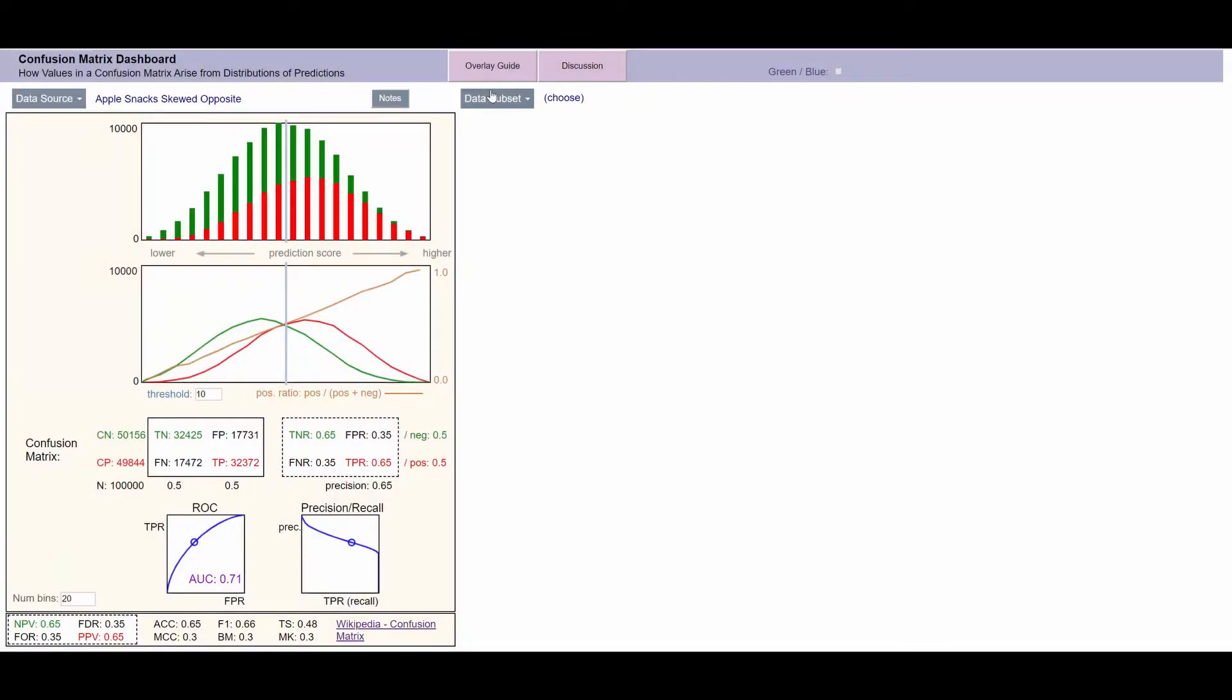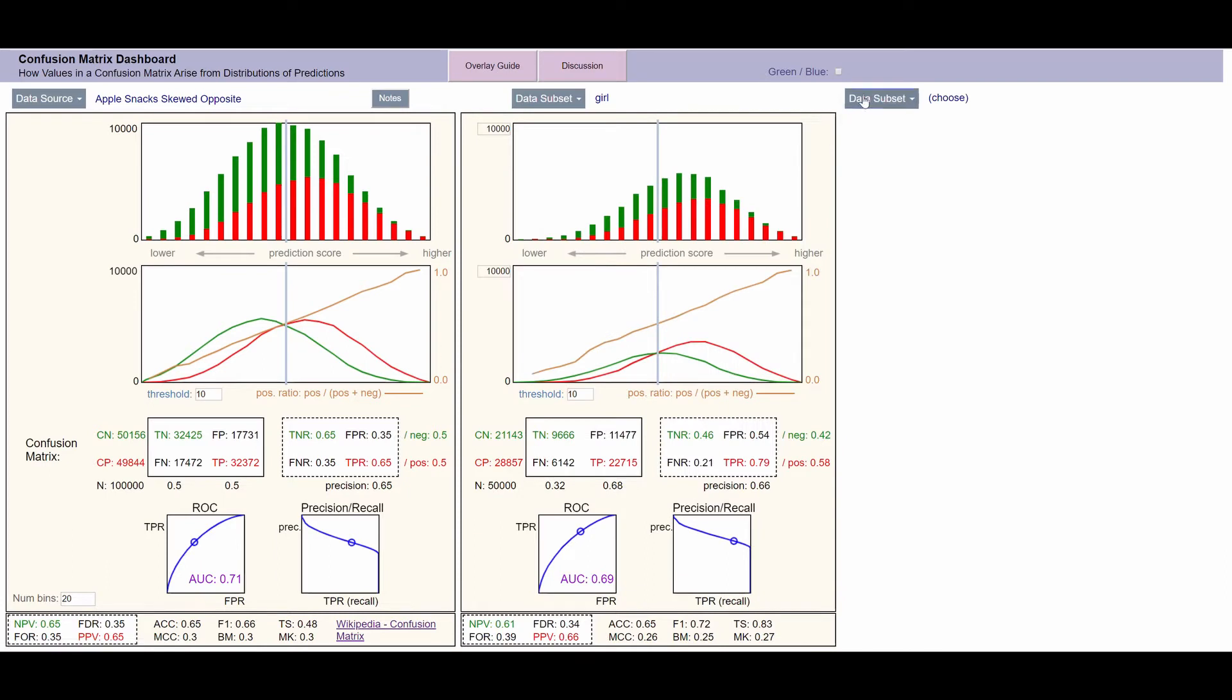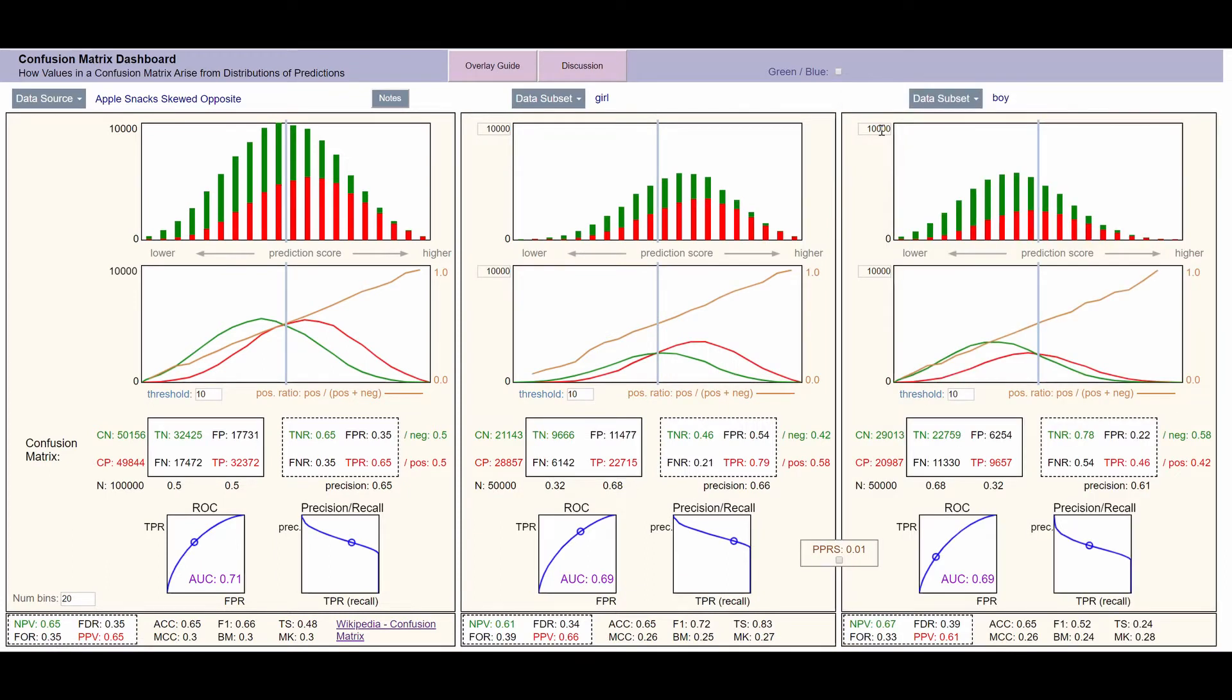The other two panels are slices, or subsets of the data, that you can select with these drop-downs. The dashboard is designed to fit a standard HD screen. That's 1920 by 1080 pixels.